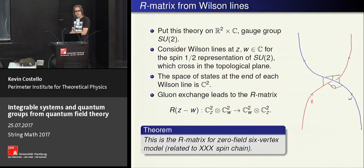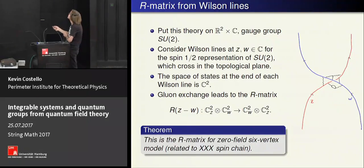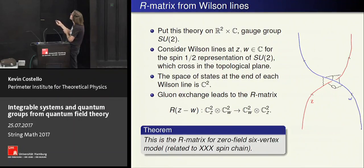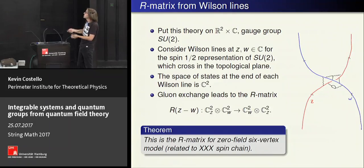The fundamental fact that relates this theory to the theory of integrable systems and quantum groups is the following. Consider this configuration: take our gauge group to be SU(N) for simplicity, take the fundamental representation, and consider two Wilson lines which cross and live at different points in the z-plane. When they cross, we can take states at the bottom and bring them up to states at the top, giving some linear operator from C² ⊗ C² to itself. The fundamental theorem is that this linear operator is the R-matrix for the six-vertex model, or the XXX spin chain. This generalizes to other groups, other representations, replacing C by C* or an elliptic curve.